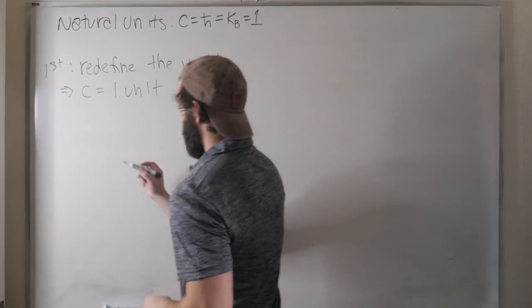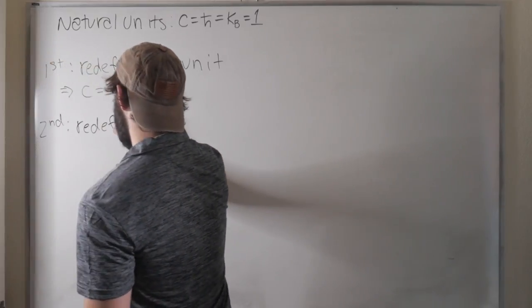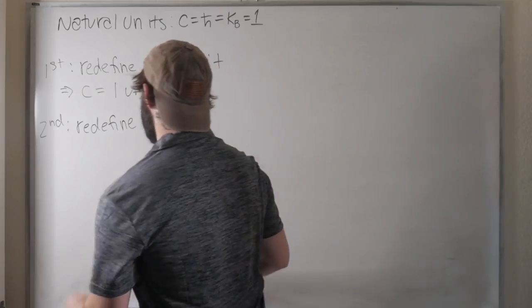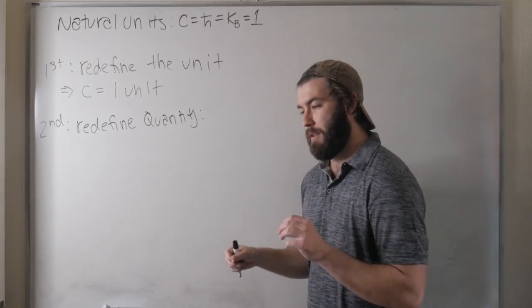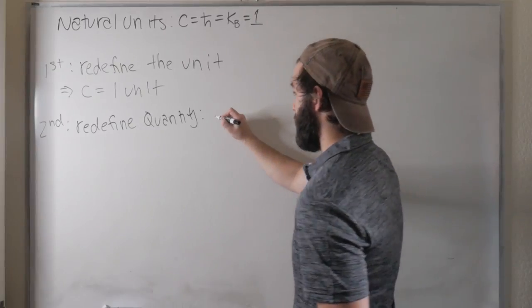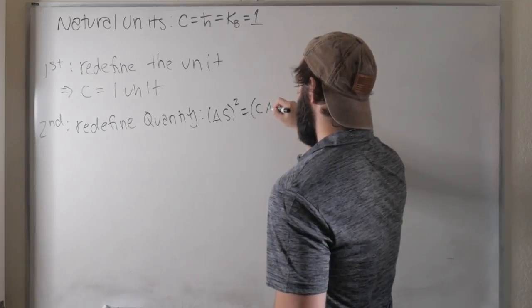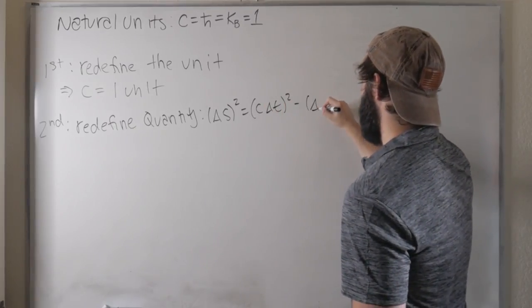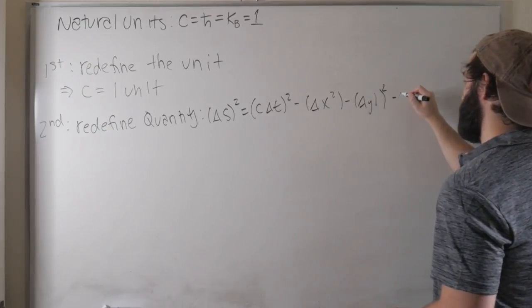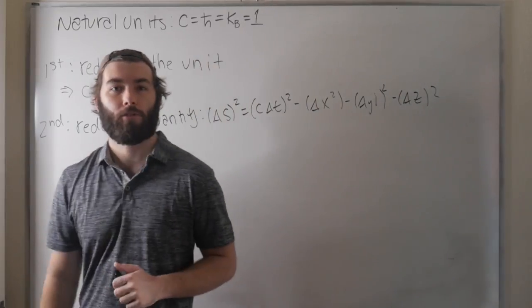The second thing is to redefine the quantity, the physical quantity. And I think that this is the more common thing to do, but it still has a little hint of sloppiness in it, I think. So if I consider the invariant spacetime interval in special relativity, delta S squared is equal to c delta T squared minus delta X squared minus delta Y squared minus delta Z squared. Special relativity says that space and time should be on equal footing, so why not insist that they also have the same units?